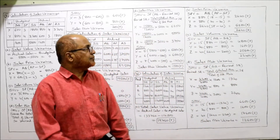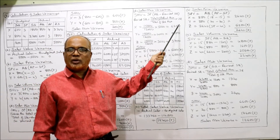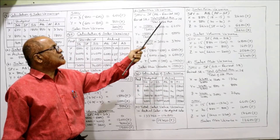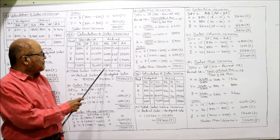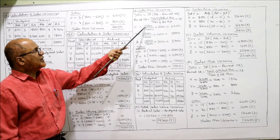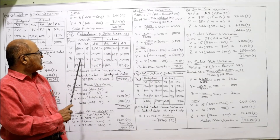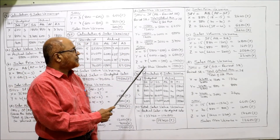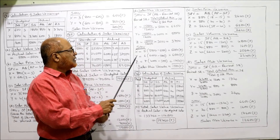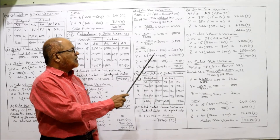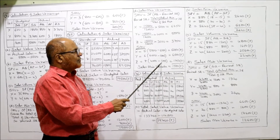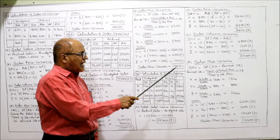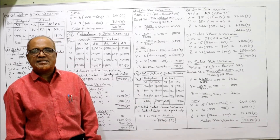Now sales mix variance equals standard price into (actual quantity minus revised SQ). Revised SQ equals total actual mix divided by total standard mix into standard quantity. Actual mix is 15,000 and standard mix is 12,000. For X: 15,000 ÷ 12,000 into 5,000 equals 6,250. For Y: 15,000 ÷ 12,000 into 4,000 equals 5,000. For Z: 15,000 ÷ 12,000 into 3,000 equals 3,750. Substituting: standard prices 5, 6, 7; actual quantities 5,000, 6,000, 4,000; revised SQ 6,250, 5,000, 3,750. Result: 1,500 favorable — that is the sales mix variance. This is the end of problem 35.